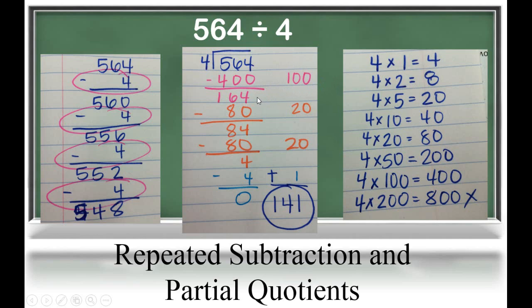Now, we have 164 left to divide. So, we need to subtract the largest multiple we can, which is 80. 80 is 20 groups of 4. So, we record that with our other partial quotients.